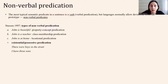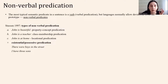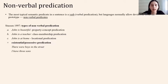Stassen proposed the next typology of nonverbal predicates. He proposed three types: property ascriptive predication, as in example A — 'John is beautiful'; class membership predication — 'John is a teacher'; and locational predication — 'John is at home'.